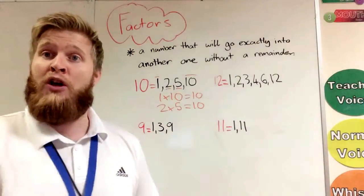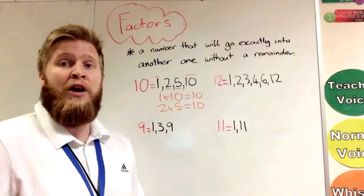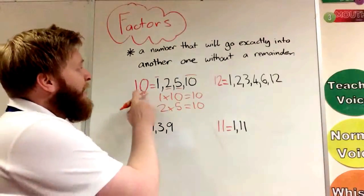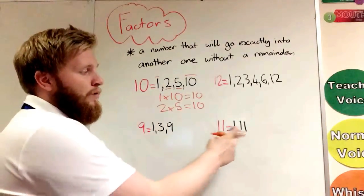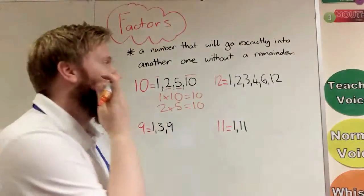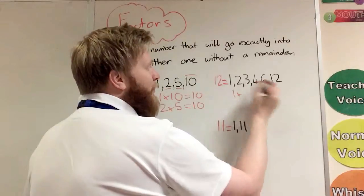12 has more factors. Different numbers have different amounts of factors. It doesn't matter how big it is—some bigger numbers might have less than small numbers. 10 we've seen got 4, 11 which we'll look at later has 2. So it doesn't mean how big the number is as to how many factors they have.